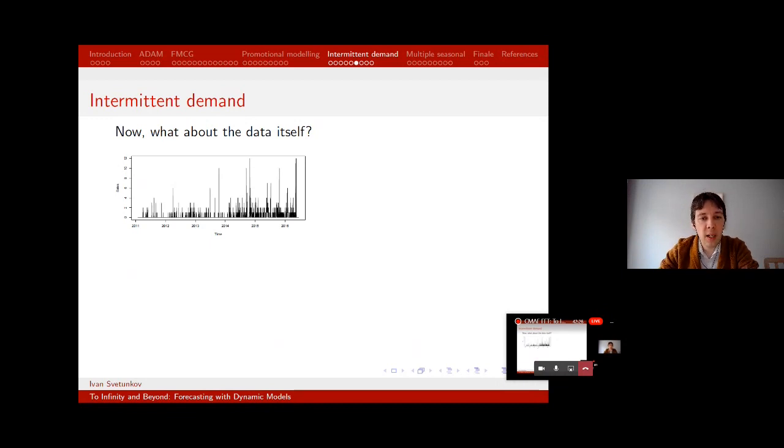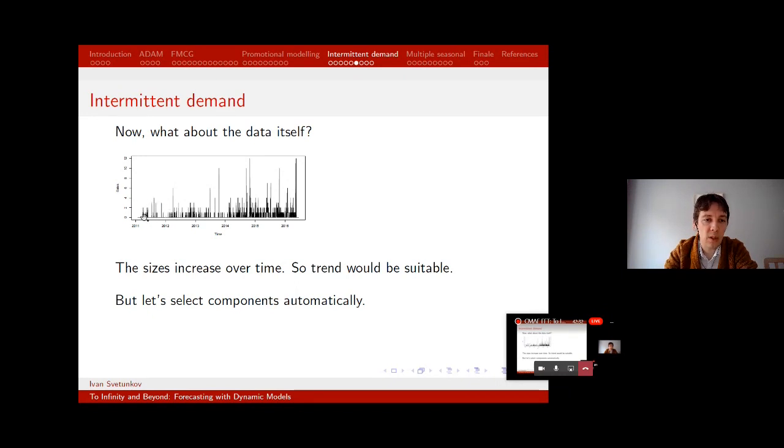This is how it evolves over time and it's not very well seen here, but the blue line goes a bit upwards. So we're saying that over the next few days the probability that they will buy our product will increase. Now what about the data itself? The sizes actually increase over time as well, right? Because in the beginning it was around 2, 3, 4, then it goes up further and further 10, 12. So yes, there is some tendency here as well, but let's for this specific case we will use automatic components selection. The reason why I didn't use automatic for occurrence part is because it's very difficult to select the model when you just have zeros and ones. That's why it's preferable to use judgment, I would say.